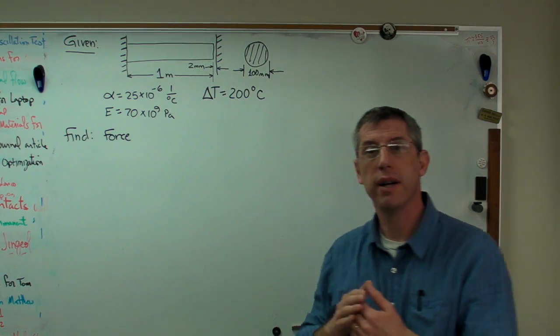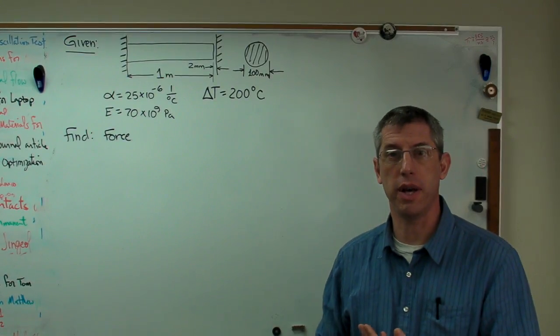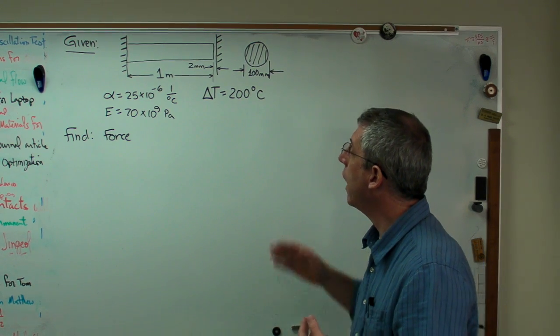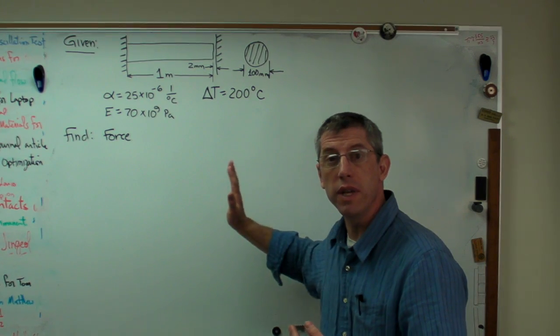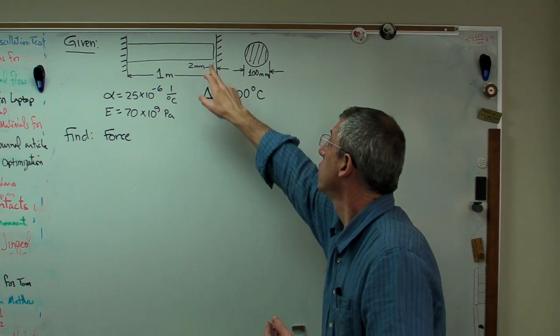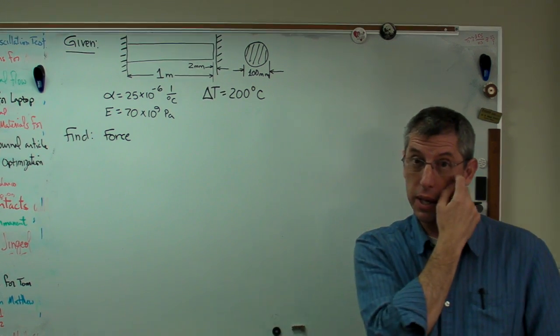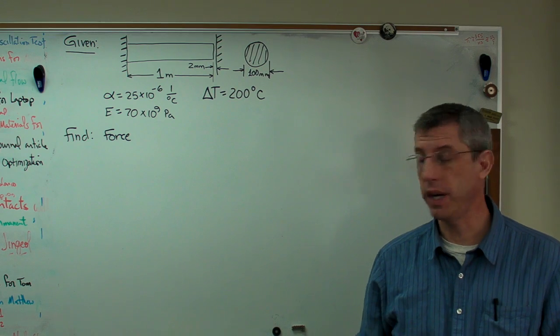If this barrier wasn't there, how far would it stretch just due to that much heat? And then I'm going to figure out how much force it would take to move the end of the bar back so that the total deformation is only two millimeters. So here's what we're going to do.